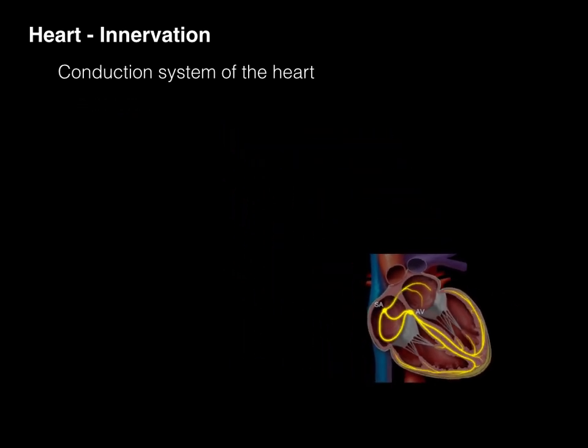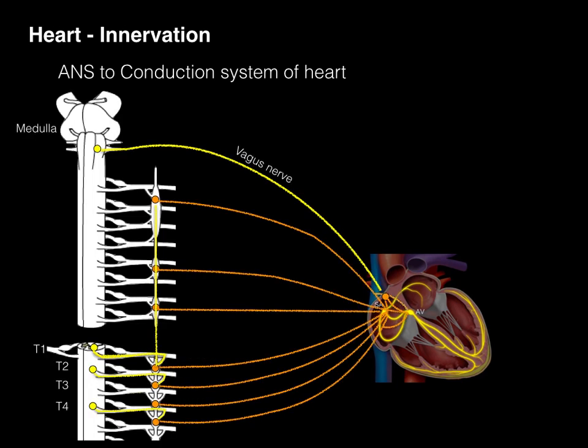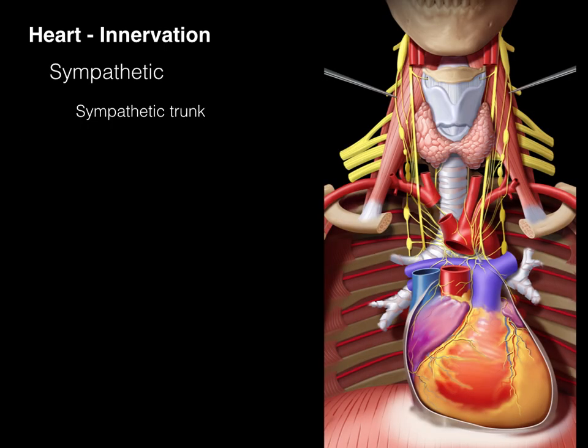So here we have the conduction system of the heart, and the autonomic nervous system influences this conduction system. The SA node is always firing — it's the pacemaker. What changes the pace is either the vagus nerve telling the SA node to slow down, or the sympathetics telling it to speed up.